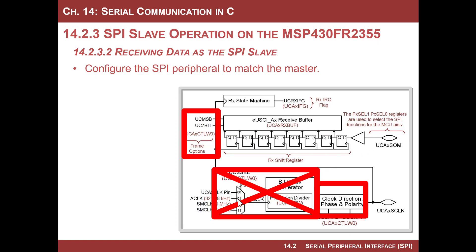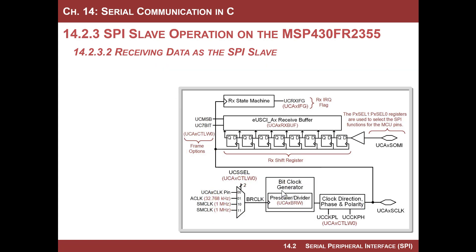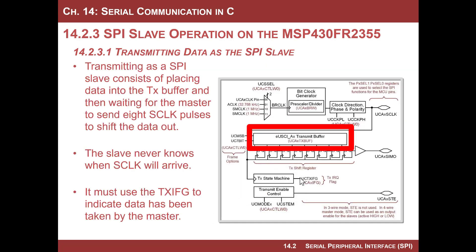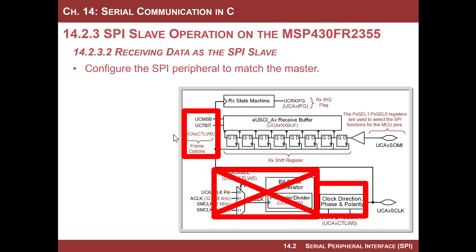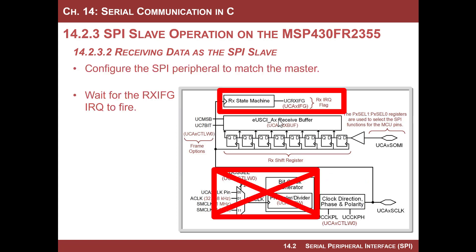For receive, you don't have to set up the clock source, but you do have to set up the clock direction, phase, and polarity. Remember, this clock system is the same between transmit and receive — I'm drawing it in two different pictures, but this is not a separate receive clock system; it's the same thing. Once you set it up and configure the framing, all you do is wait for information.